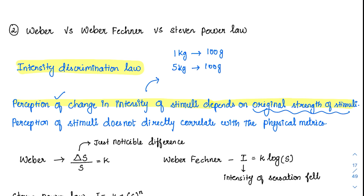If the original strength is already high, the perception of change will be different. The second point is that perception of stimuli does not directly correlate with the physical matrix. In the same example, in the second scenario I give you 500 grams added to 5 kg. Now will you be able to appreciate it? Yes. You will say the weight has increased, but can you tell exactly how much? That is less possible.